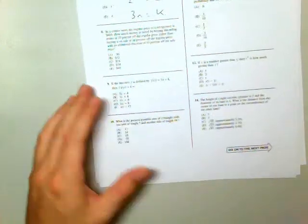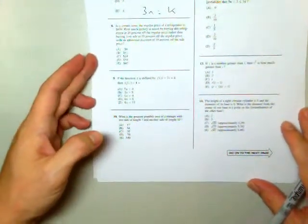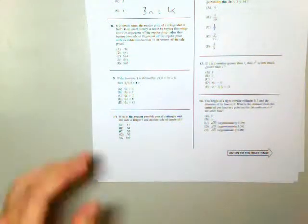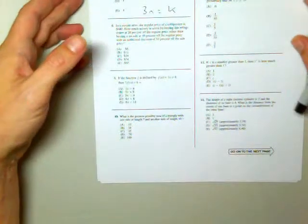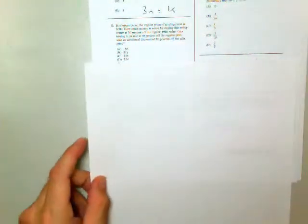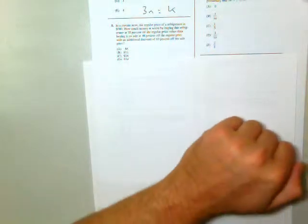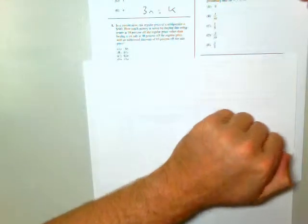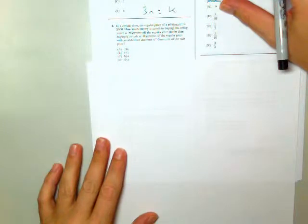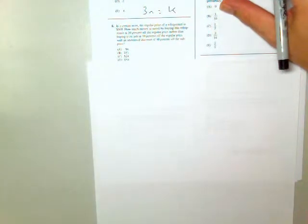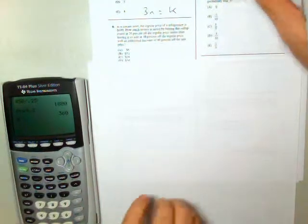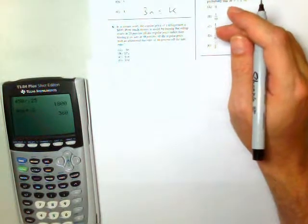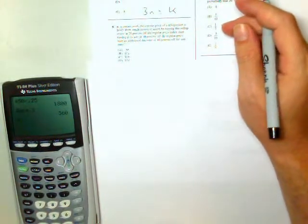Number 8. In a certain store, the regular price of a refrigerator is $600. How much is saved by buying this refrigerator at 20% off the regular price than buying it on sale, 10% off the regular price with an additional 10% off the sale price? All right. Well, I'm going to go ahead and do this one, then I'll tell you what this one's all about. Maybe not in that order.